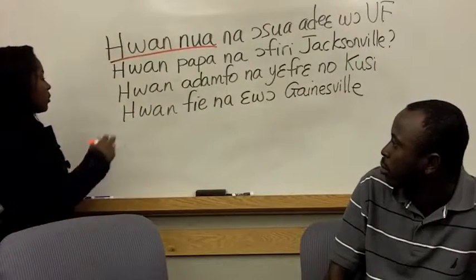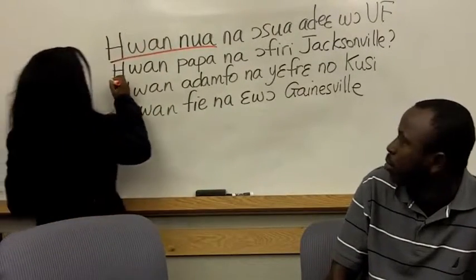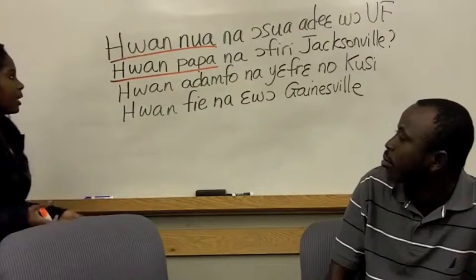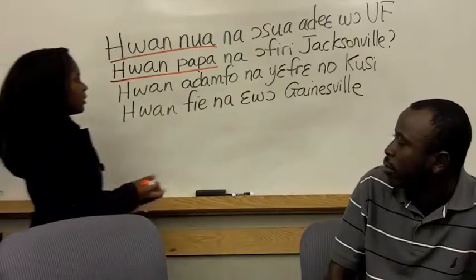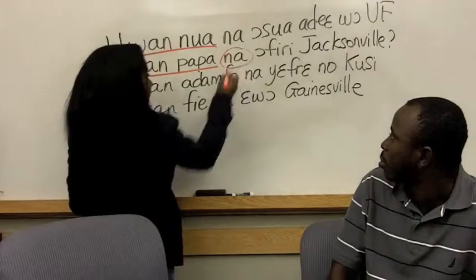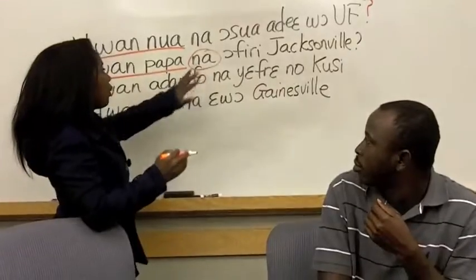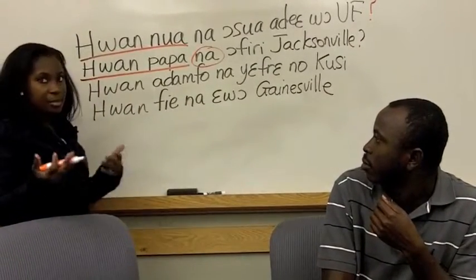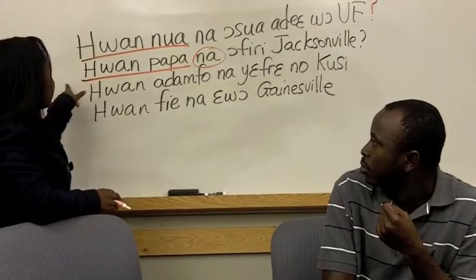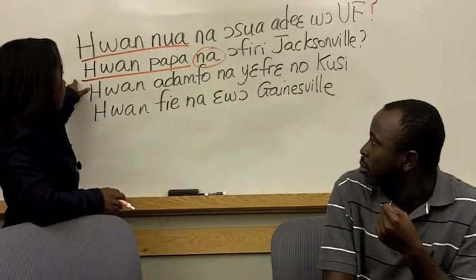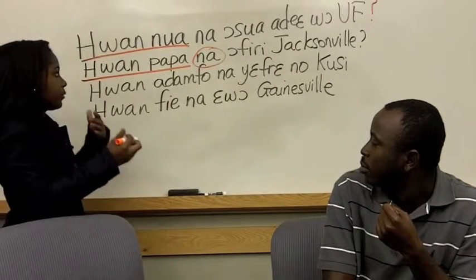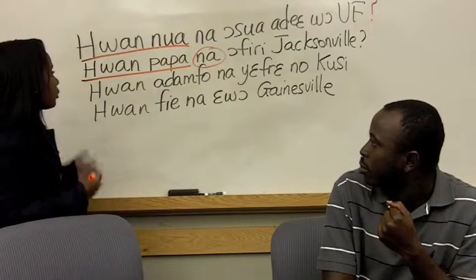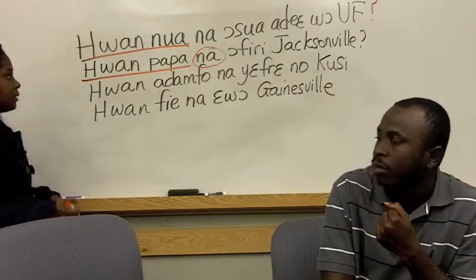For the next sentence, whine papa is asking 'whose father,' and it is followed by na. O fre Jacksonville means 'he or she comes from Jacksonville.' So when you put whine papa na in front of o fre Jacksonville, you get 'whose father comes from Jacksonville.'